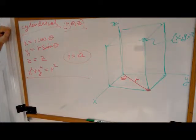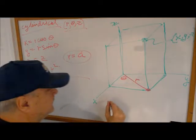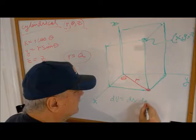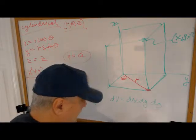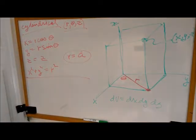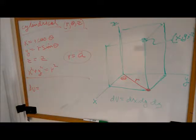We also need one more thing. In the rectangular coordinate system, dV is dx dy dz. In this transformed system, we also need a dV. What's it going to be equal to?